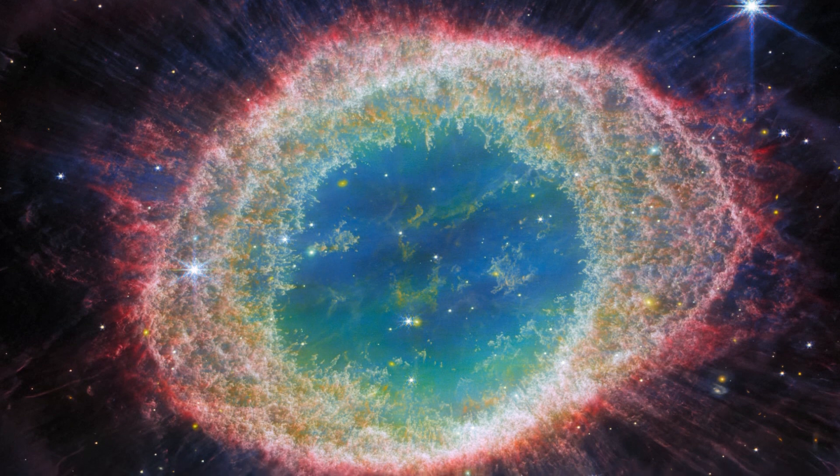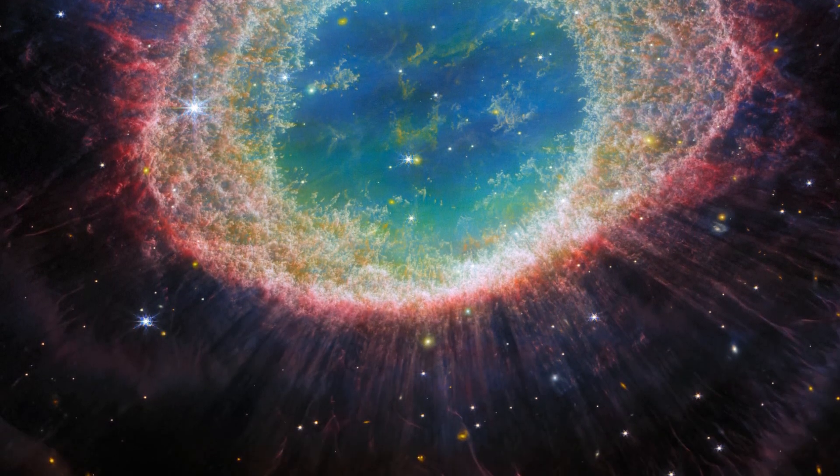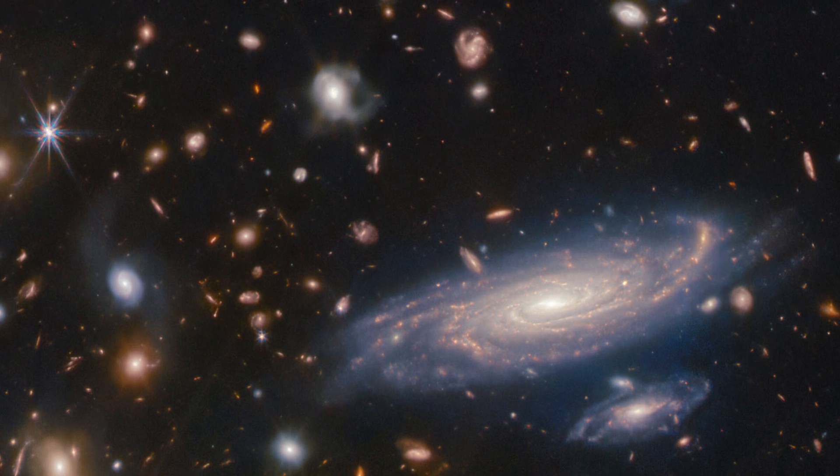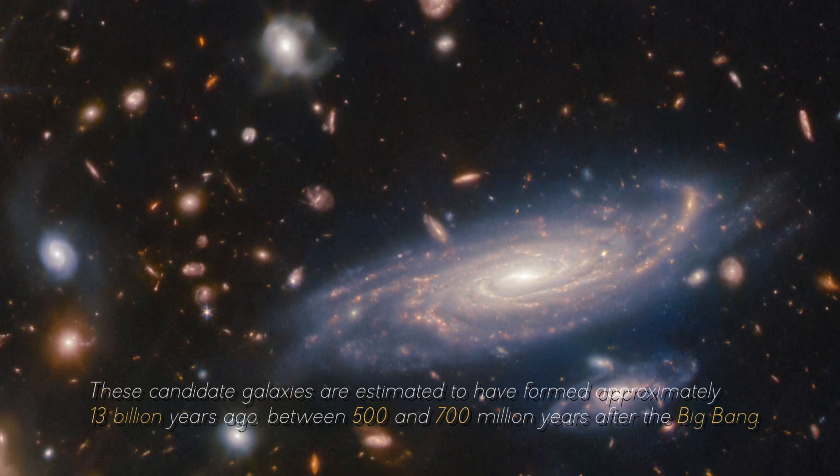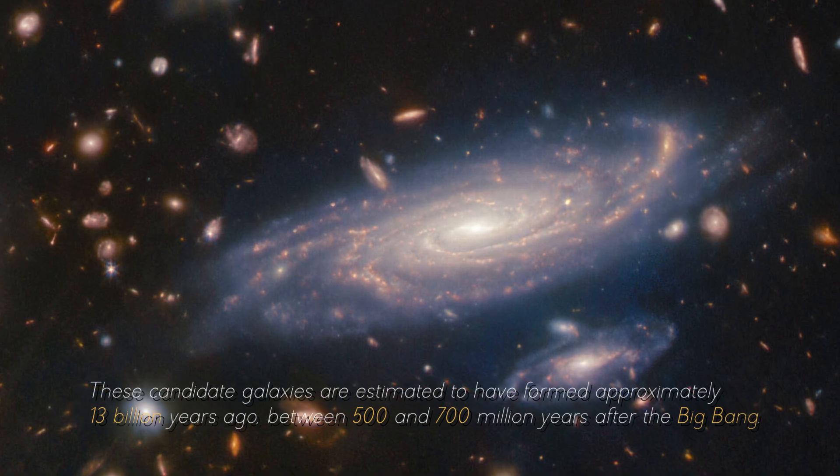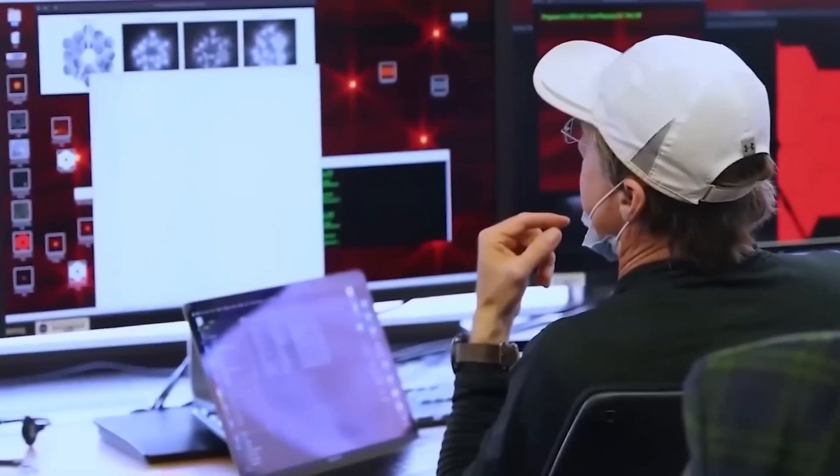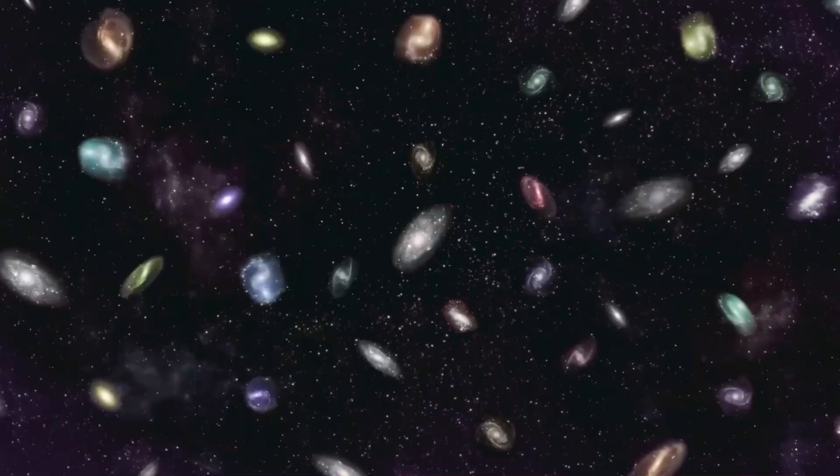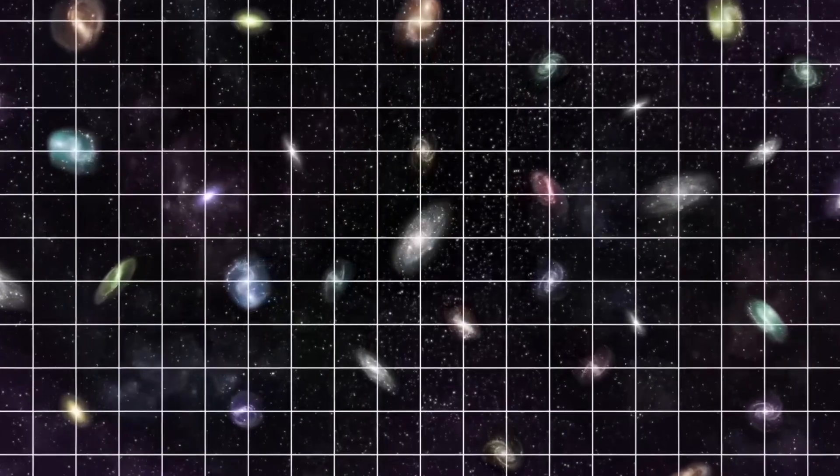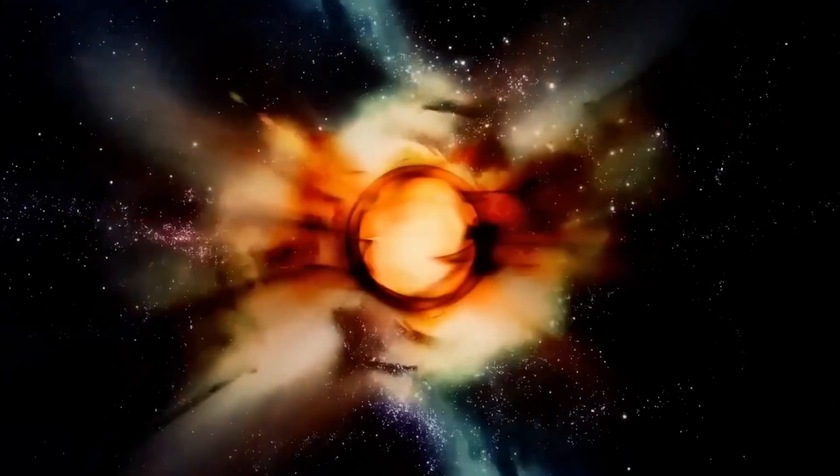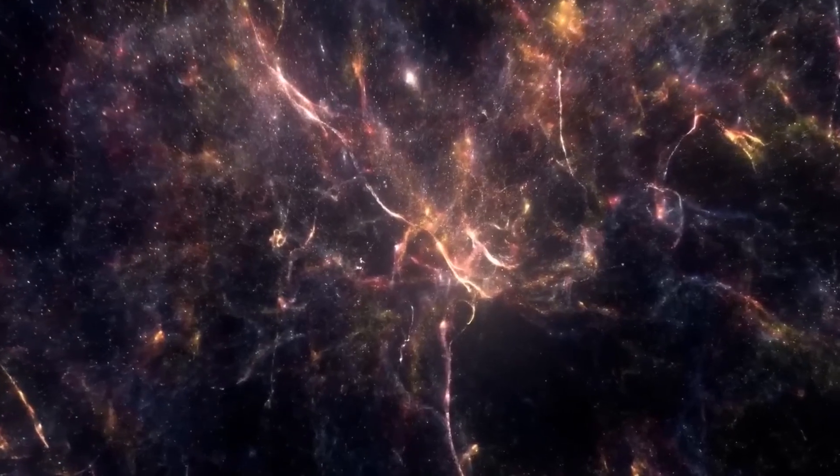However, images captured by the James Webb Space Telescope are challenging the Big Bang Theory, as they show galaxies of enormous sizes that appear not to have been able to exist or are not consistent with the Big Bang Theory. These candidate galaxies are estimated to have formed approximately 13 billion years ago, between 500 and 700 million years after the Big Bang. Astronomers had the expectation of observing young, small galaxies in this region of early space. However, images captured by the space telescope reveal that the stellar systems may contain about the same number of stars as our own Milky Way galaxy, instead of finding tiny, young galaxies discovering mature galaxies similar to our own in what was thought to be the dawn of the universe.